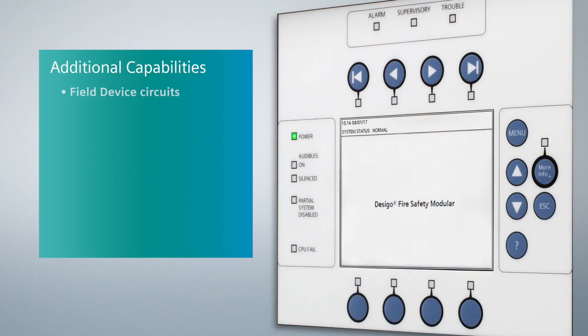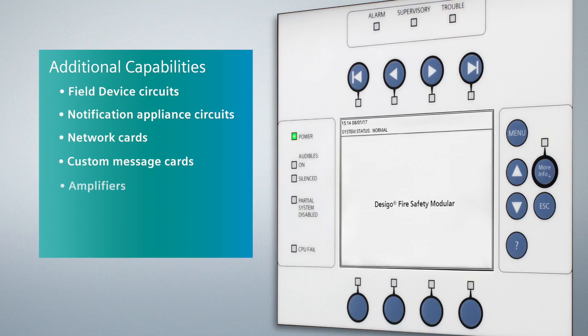Additional capabilities include field device circuits, also known as detectors, notification appliance circuits, also known as horn strobes, network cards, custom message cards, amplifiers, auxiliary relays, and additional power.